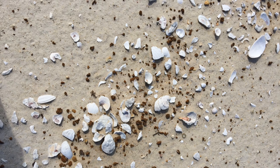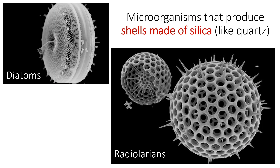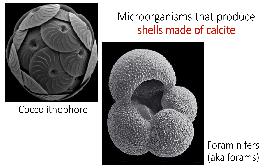Not all shells start out big. Many microorganisms produce shells too tiny to see with the naked eye — you need a microscope. Some of the most important are diatoms and radiolarians, which produce shells made of silica, the same compound found in the mineral quartz. Coccolithophorins and foraminiferins also produce tiny shells, but in these cases the shells typically consist of calcium carbonate minerals like calcite. All four of these microorganisms contribute to biogenous sediment in a variety of places in the ocean today.